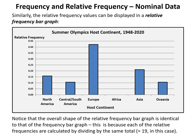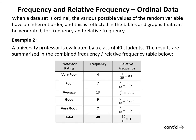Similarly, the relative frequency can be displayed in a relative frequency bar graph. It looks very similar — the only difference is the y-axis now shows relative frequencies obtained by dividing each frequency by 19. North America's value is 3/19, just over 0.15. Notice that the overall shape of the relative frequency bar graph is identical to the frequency bar graph, because each relative frequency is calculated by dividing by the same total.